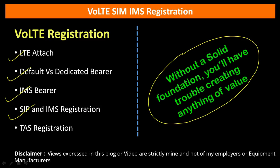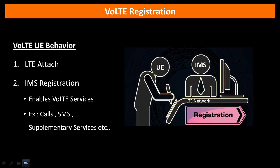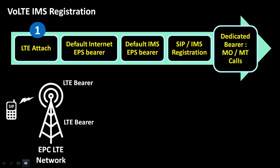Here is the VoLTE registration overview. Prior to using VoLTE service, a user must be attached on the LTE network. Typically the Internet APN is connected first, followed by IMS APN connectivity on the LTE network. The next step is IMS or SIP registration, which enables the user to make voice or video calls over VoLTE along with using supplementary services. For using VoLTE services, a user needs to go through specific steps.